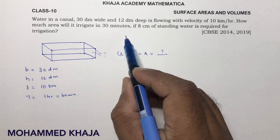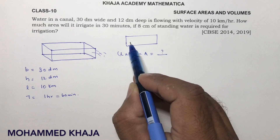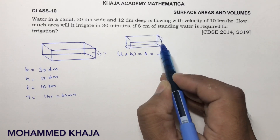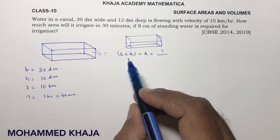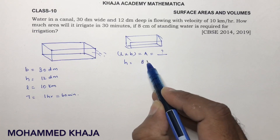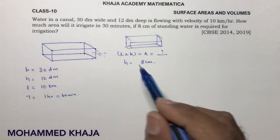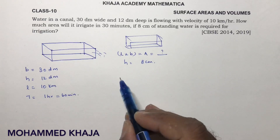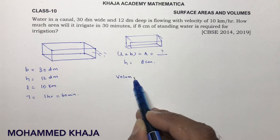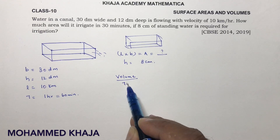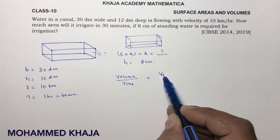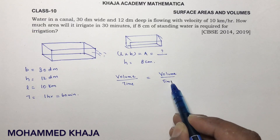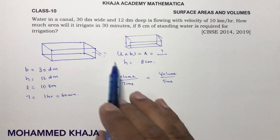The ground area is also taken in the shape of a cuboid, because when water is standing on the ground we take it as a cuboid. So l into b I need to find, and height is given as 8 centimeters. Whenever water flows from one place to another, the easy method is: volume by time equals volume by time, because the same volume flows onto the ground.